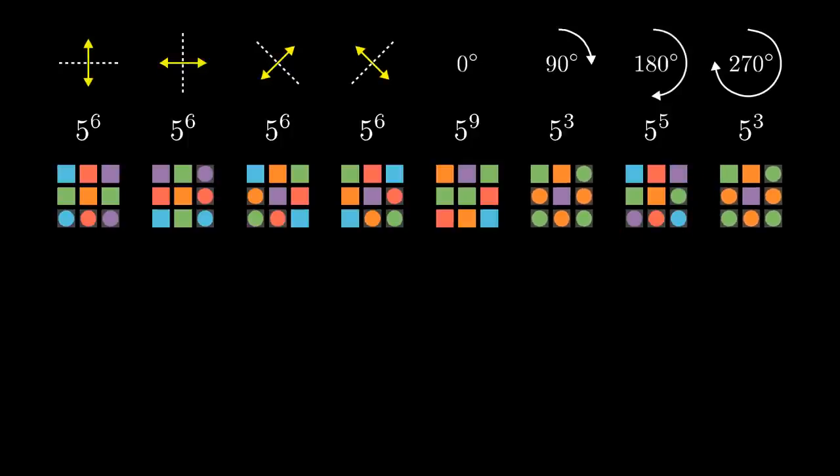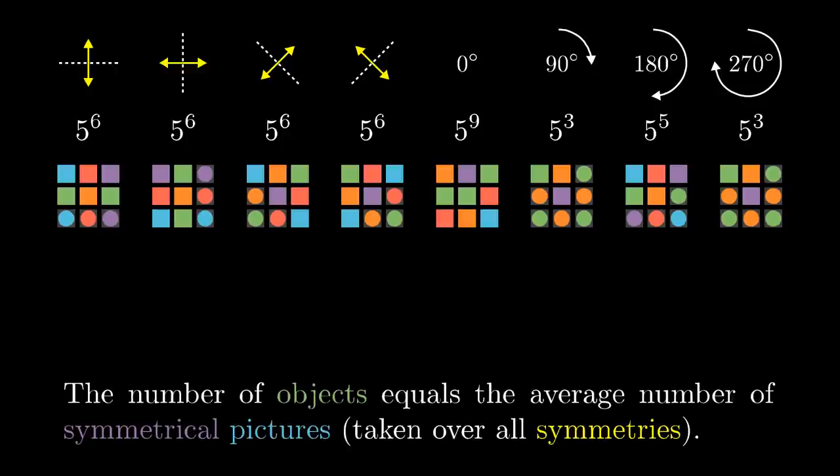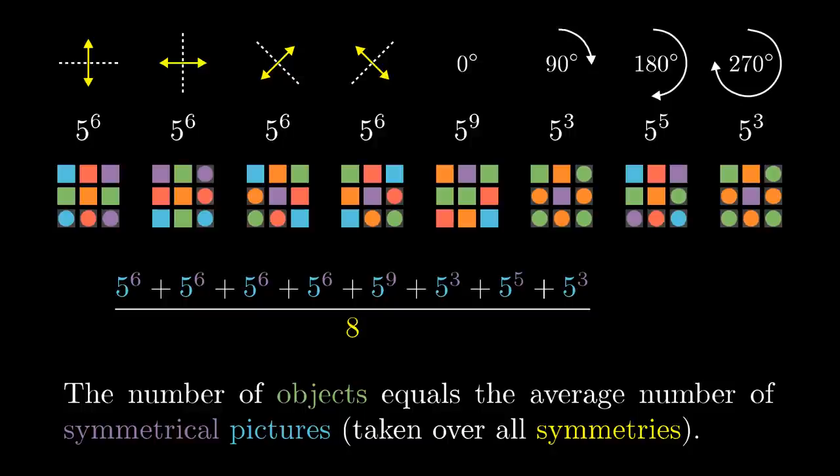This calculation was maybe a bit fast, but on the other hand just technical, so if you wish just pause the video and check that the computation of symmetrical pictures makes sense. Burnside's lemma states that the number of objects equals the average number of symmetrical pictures. So we take all the numbers of symmetrical pictures that we've calculated and take their average. We sum them and divide by 8. If you ask a calculator, you will get this number. So after rotations and flipping, there are 252,375 tables colored by 5 colors.